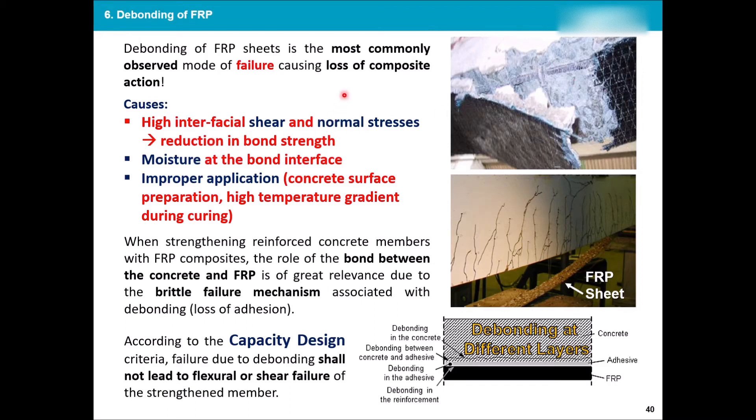Another problem is the moisture. So if the FRP and the reinforced concrete are not applied properly and they're not waterproofed, the moisture or the humidity of the environment can cause debonding, exactly like a glue. If you just apply water and water and water, after a while it will give up.